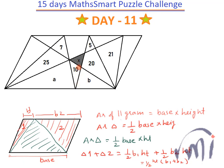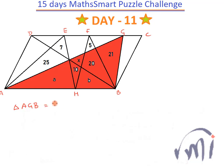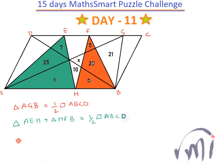This same concept is used to find the value of X. Let's name the parallelogram as ABCD and label the interior points as E, F, G, and H. The area of triangle AGB equals half the area of parallelogram ABCD. Similarly, the sum of the areas of triangle AEH and triangle HFB also equals half the area of parallelogram ABCD, since the total base equals the parallelogram's base and the height is the same.